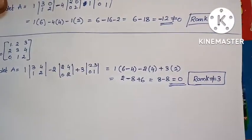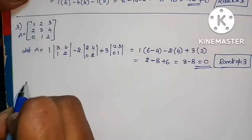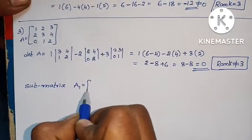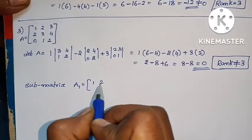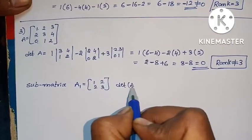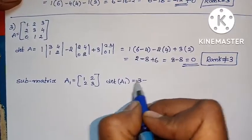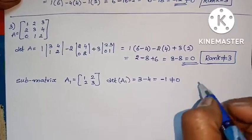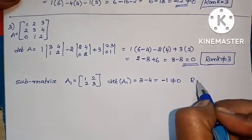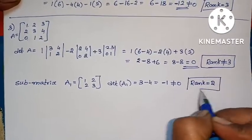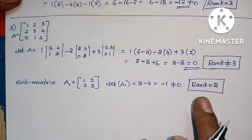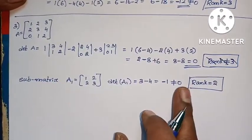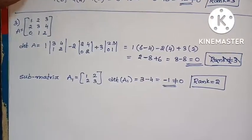Since the determinant is 0, rank is not equal to 3. Now we take a sub-matrix A1. Let A1 = [1, 2; 2, 3]. det(A1) = 3×1 - 2×2 = 3 - 4 = -1. Not equal to 0. Since the sub-matrix determinant is not equal to 0, the rank is 2. Our problem is complete — rank is not 3 but rank equals 2. If the main determinant is 0, take a sub-matrix; if its determinant is not equal to 0, rank is 2.